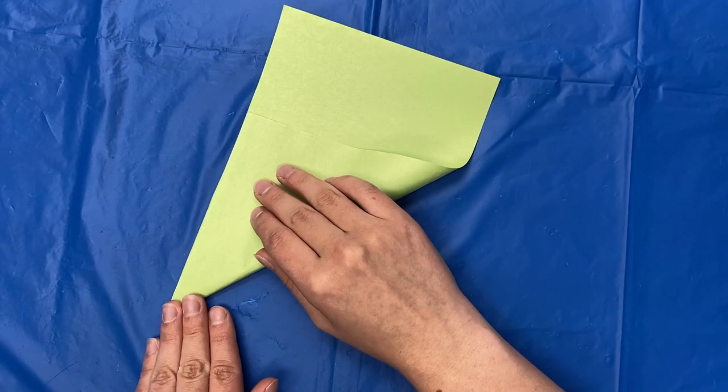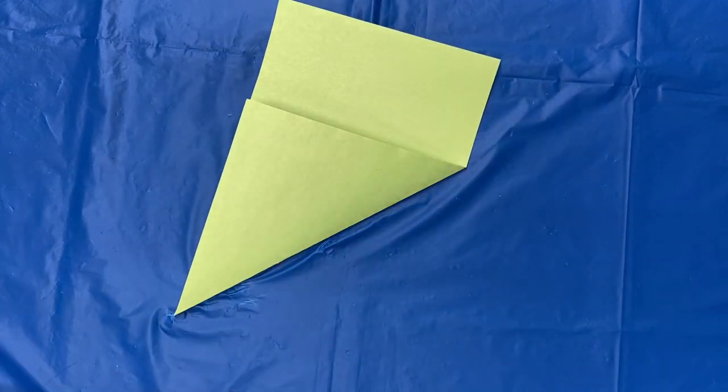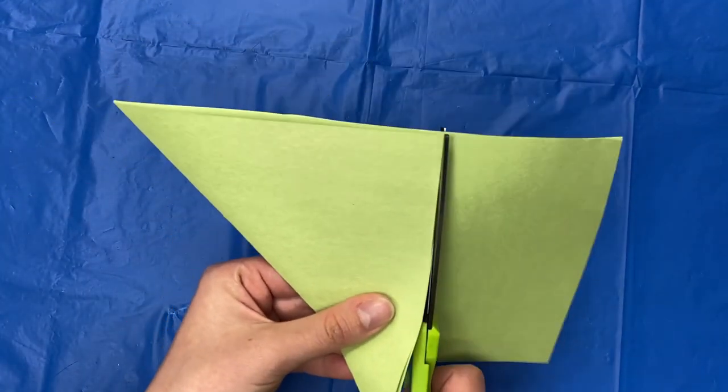Start out by cutting your papers in half. Fold the corner to make a triangle. Then cut off the excess.